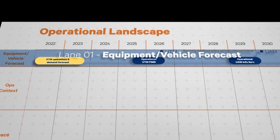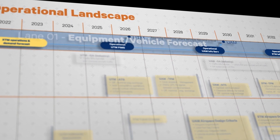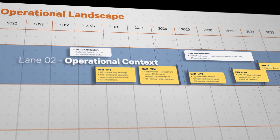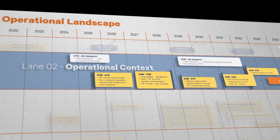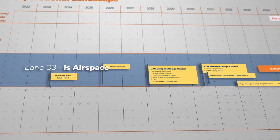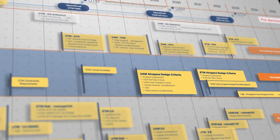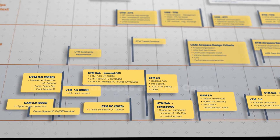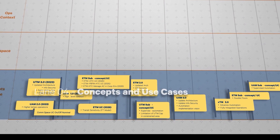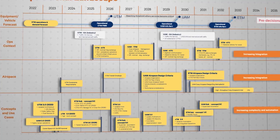The first lane is equipment or vehicle forecast, a key driver that allows for identification of when activities need to be completed to support each diverse operational domain. The second lane is operational context, defining the capabilities needed to enable incorporation of diverse operations into the national airspace system. The third lane is airspace, with activities to support the design, development, and implementation of airspace modernization, to ensure safety and efficiency of operations in shared airspace. The fourth lane is concepts and use cases, depicting concepts development and associated validation activities. These efforts will support progression of technologies and inform development of policies and standards to enable safe management of diverse operations in the NAS.